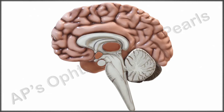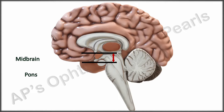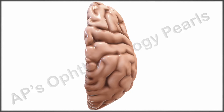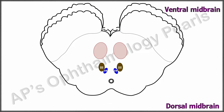Let us understand the extent of the oculomotor nucleus from this picture of the lateral aspect of the midbrain. This is the pons. The oculomotor nuclear complex is an elongated group of nuclei situated between the posterior commissure rostrally and the pontomesencephalic junction near the trochlear nucleus caudally. From the superior aspect, this would be the dorsal aspect and this would be the ventral aspect. Let us see this orientation from above at the level of the superior colliculus.